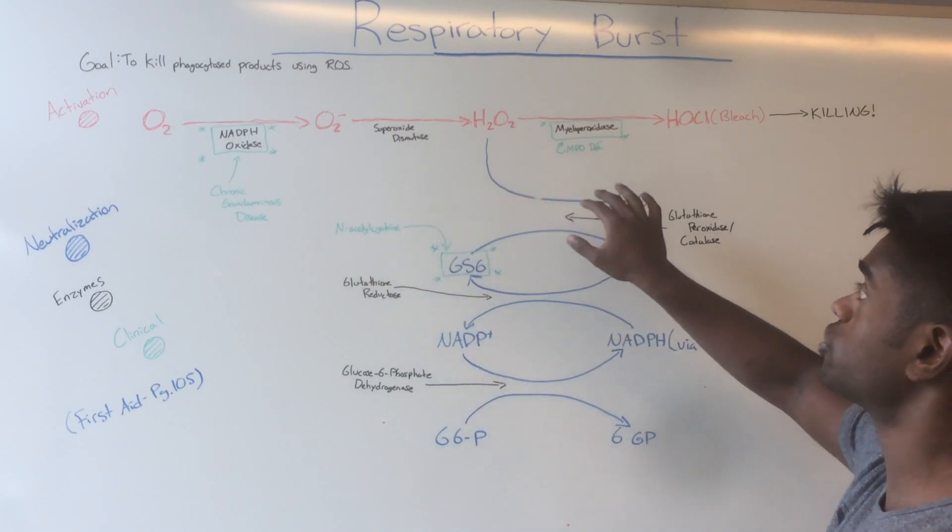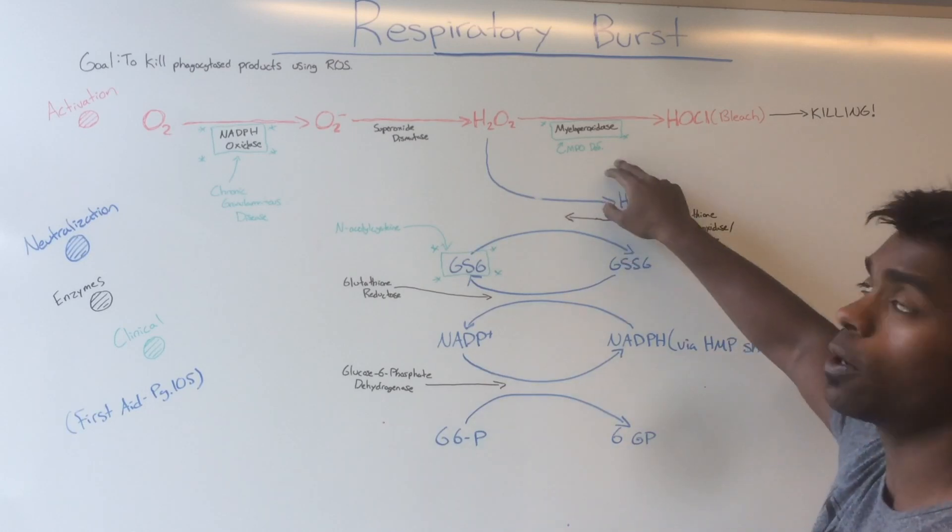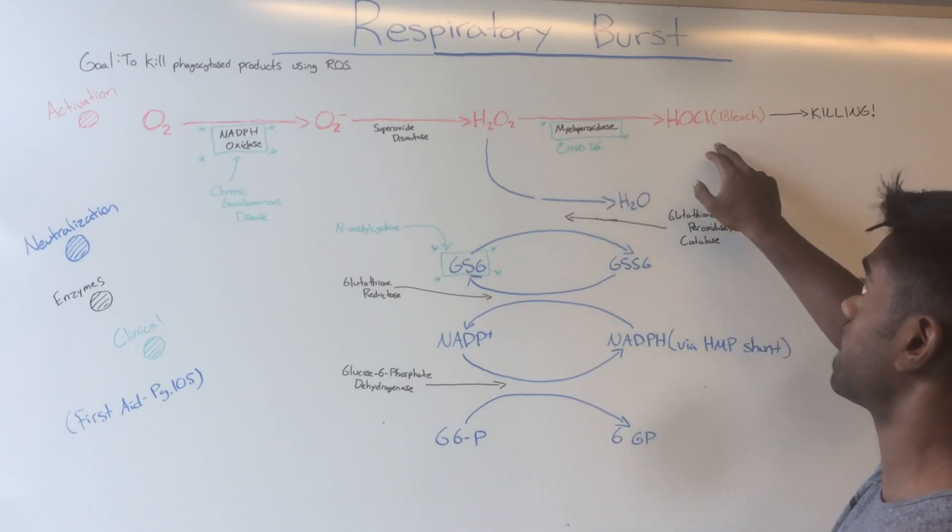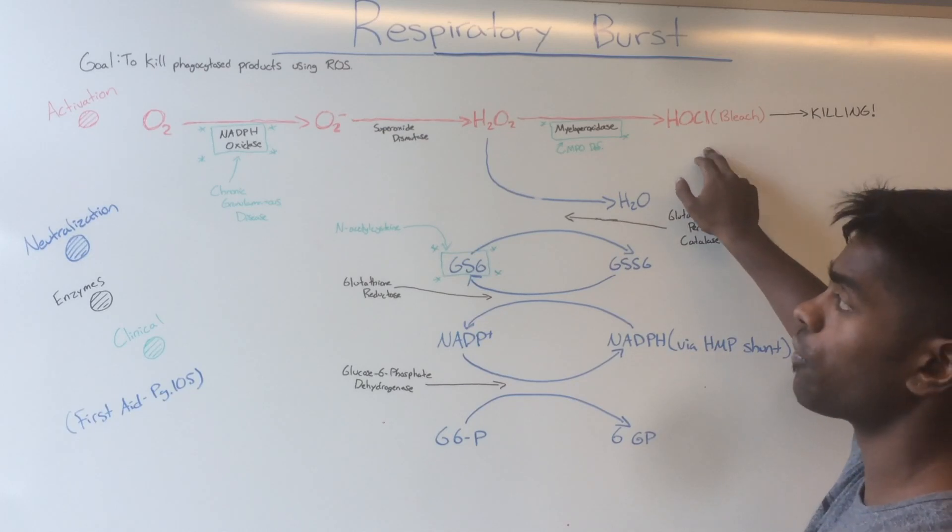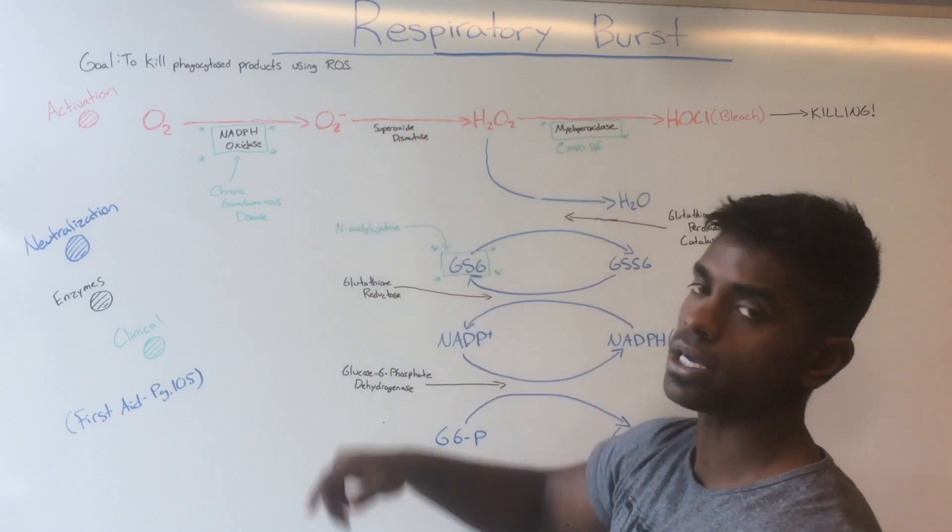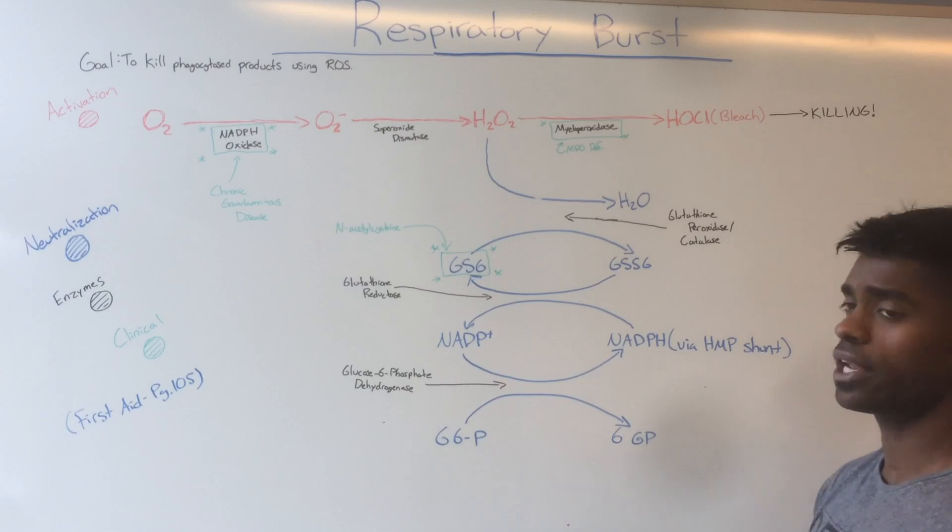In the activation pathway, you can also have myeloperoxidase deficiency. This deficiency results in a decrease in HOCl rather than a decrease in superoxide.